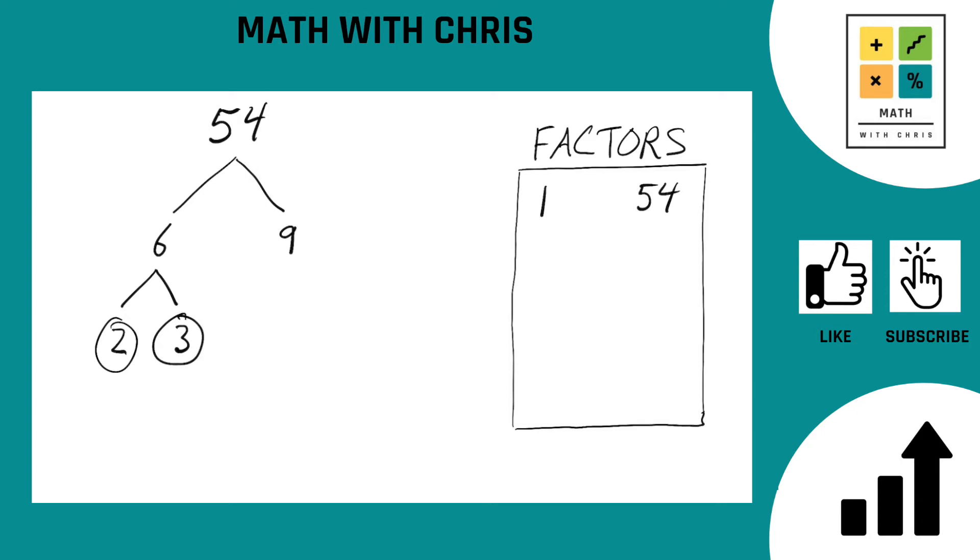So we're done with the left side of the tree. That's nice and easy. Now let's take a look at the 9. Can 9 be broken down any further? Indeed it can. 9 is of course 3 times 3. Is 3 a prime number? Indeed it is. Circle it. Is 3 a prime number? Indeed it is. Circle it.